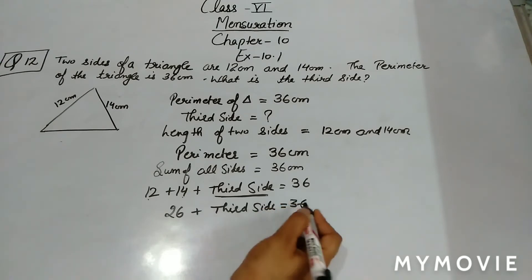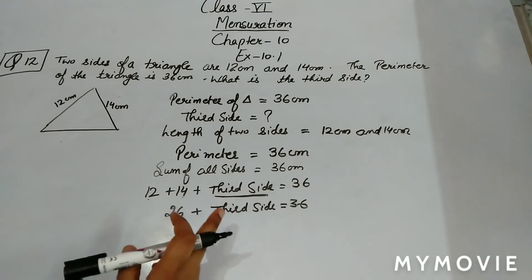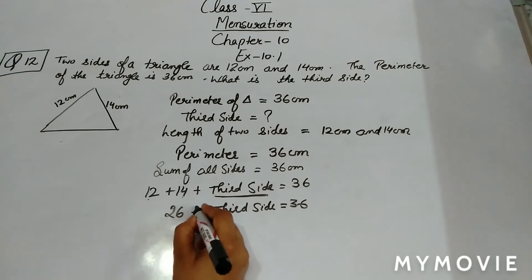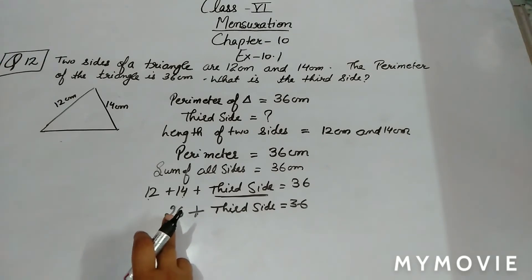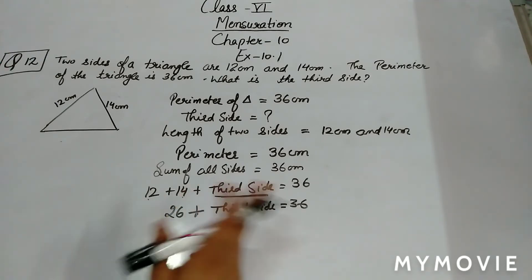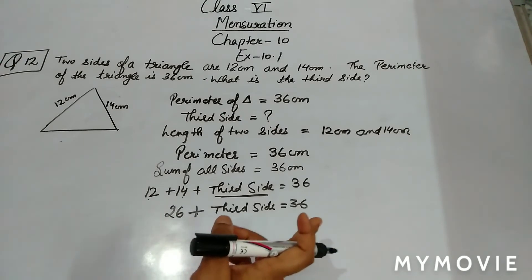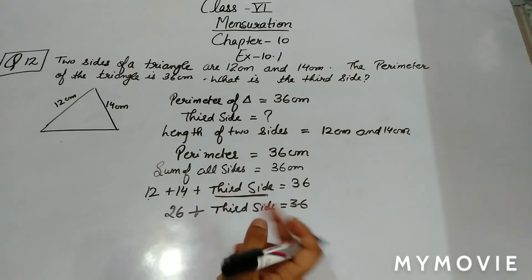Now, remember the transposition rule: when multiply moves across, it becomes divide, and when divide moves across, it becomes multiply. Similarly, when a plus number moves to the other side, it becomes minus. And when a minus number moves to the other side, it becomes plus.